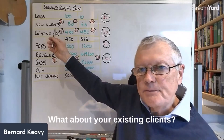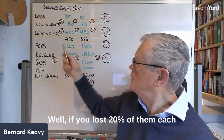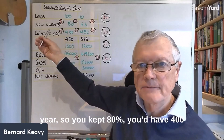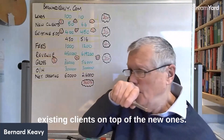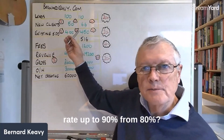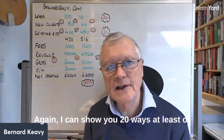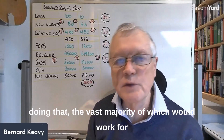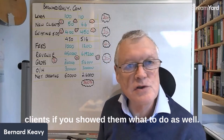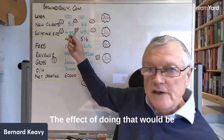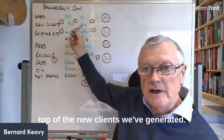What about your existing clients? Let's say you started off with 500 at the end of last year, but there's an attrition rate. If you lost 20% of them each year, so you kept 80%, you'd have 400 existing clients on top of the new ones. What if you could get your retention rate up to 90% from 80%? I can show you at least 20 ways of doing that, the vast majority of which would work for any practice, including yours, and would also work for your clients. The effect would be that we'd have 450 existing clients on top of the new clients we've generated.